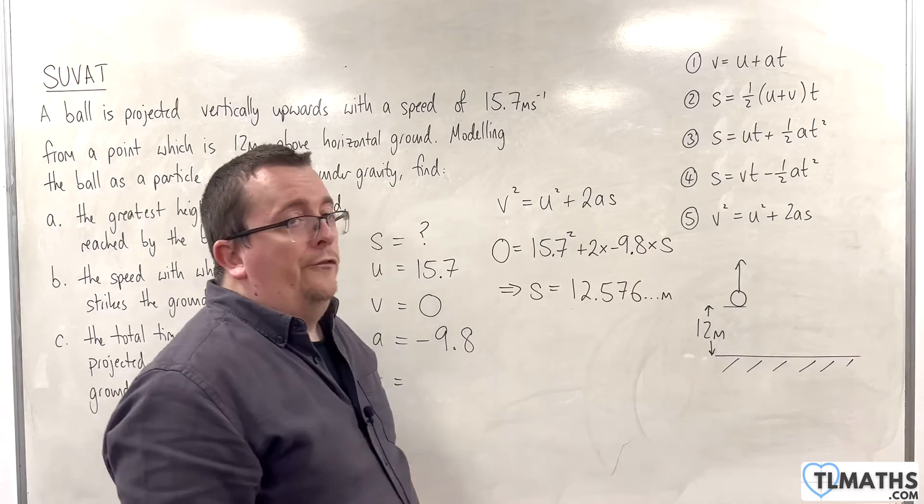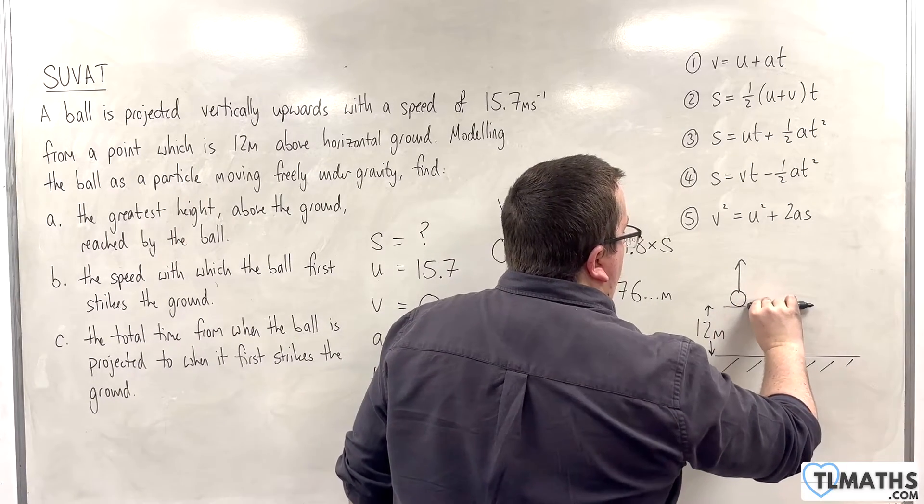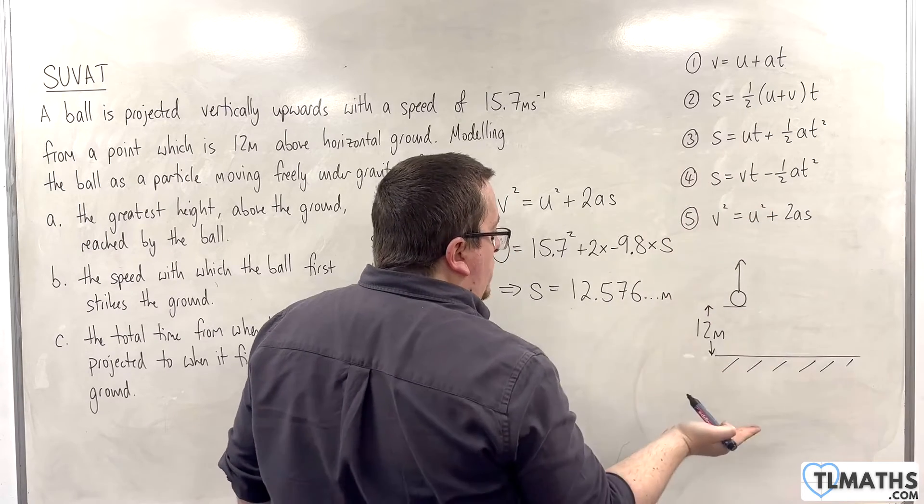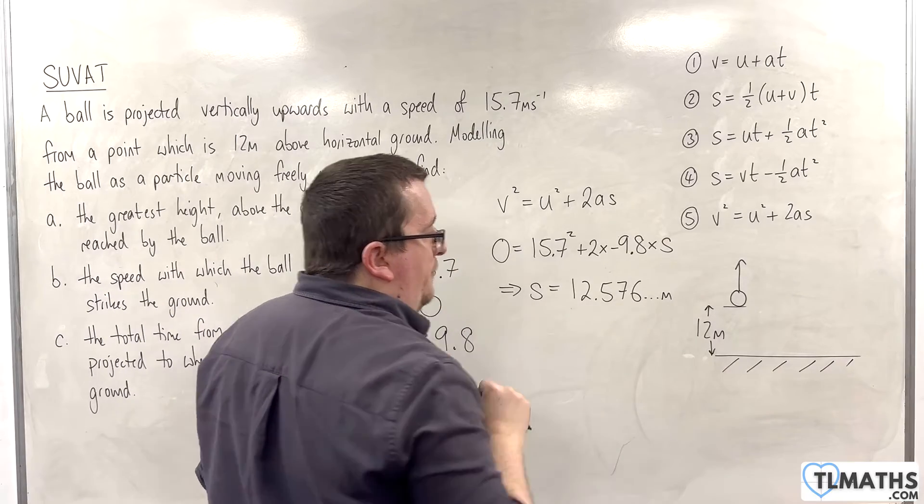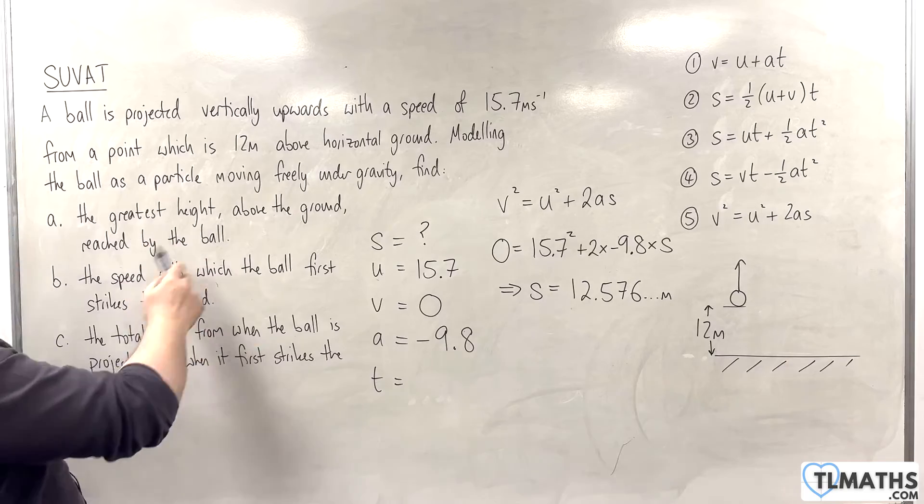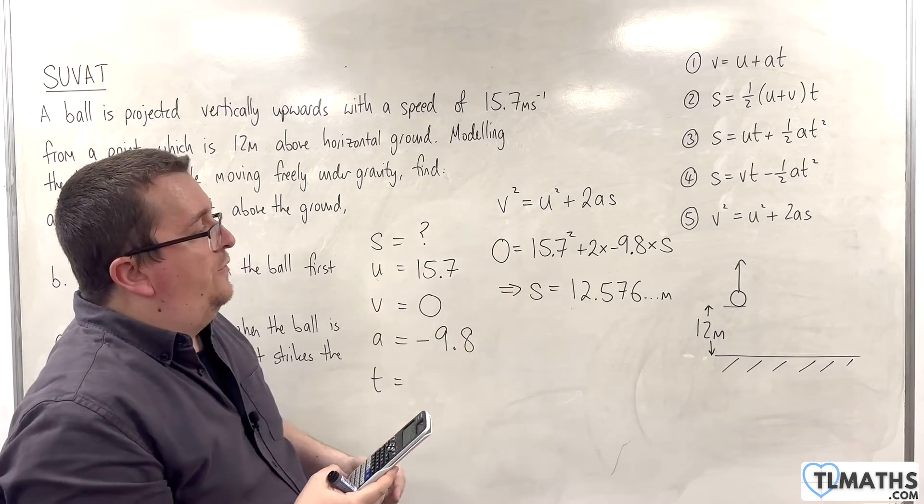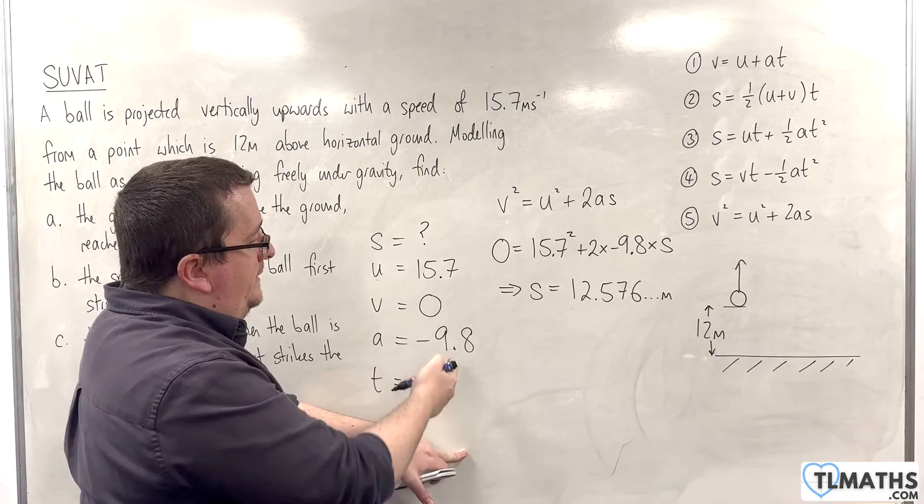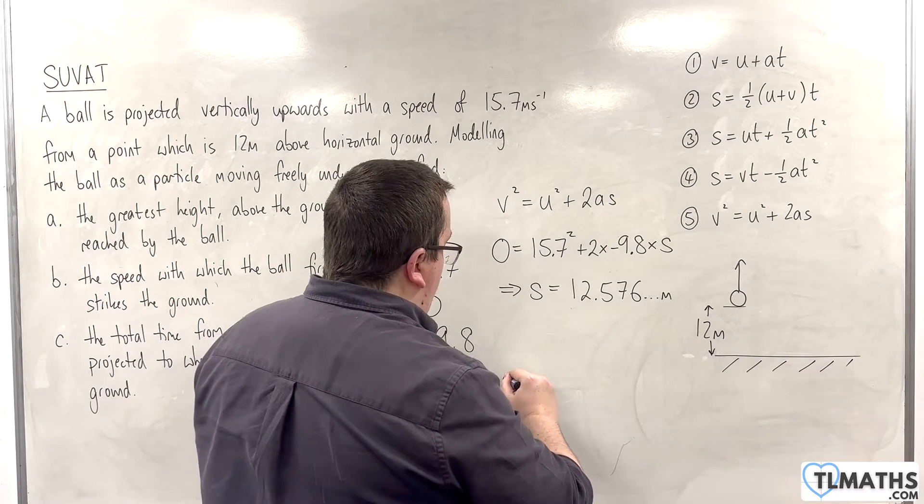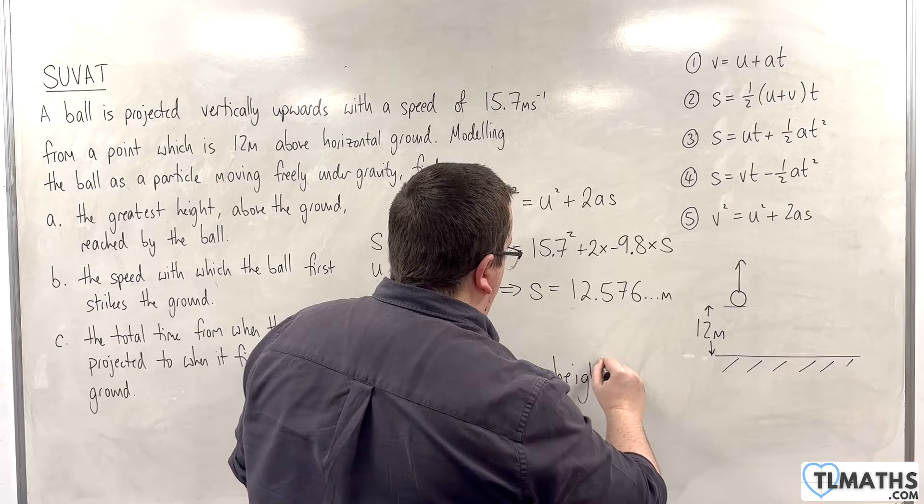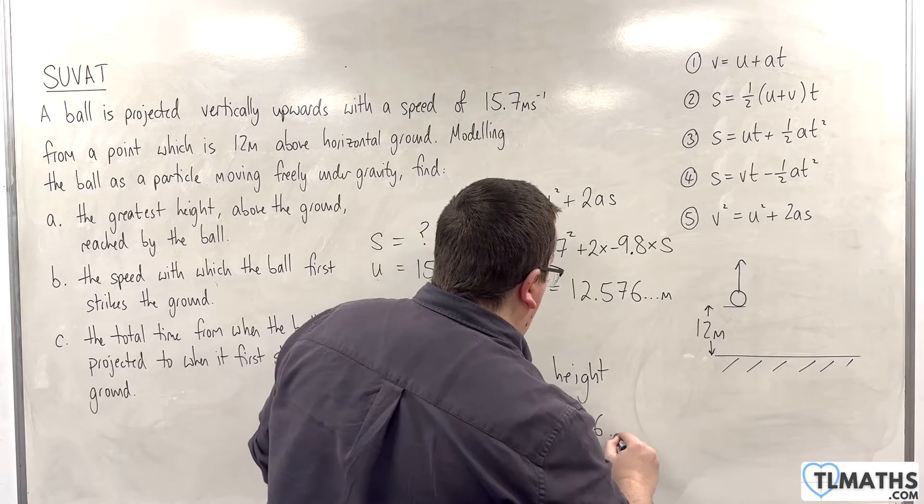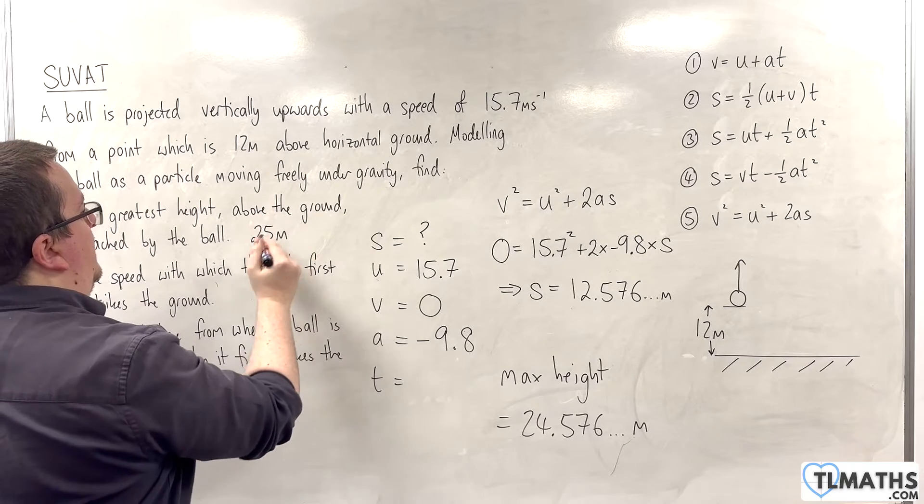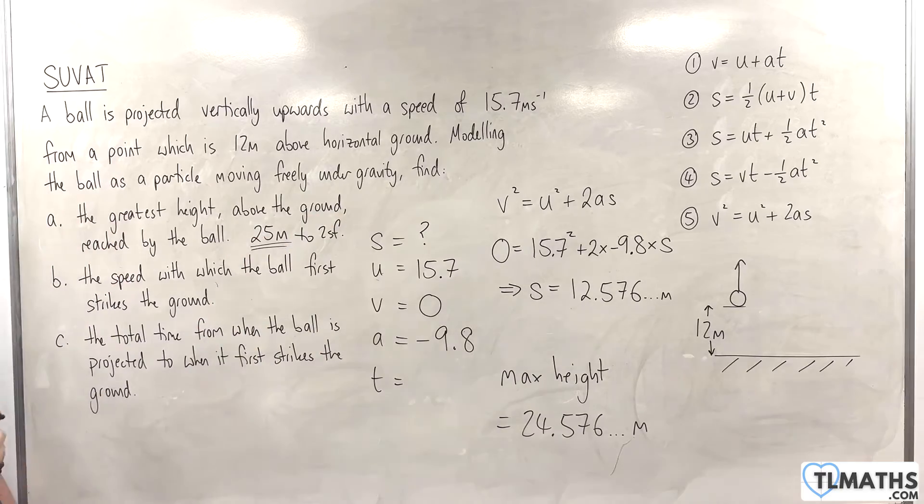Now, that is the vertical displacement from that point. But we're already 12 metres in the air. So, the distance from the ground to that maximum height is actually going to be 12 plus the 12.576, which gets us 24.576. We're going to round that to two significant figures, because we're using G is 9.8. So, max height is 25 metres to 2 sig fig. That's my answer to part A.